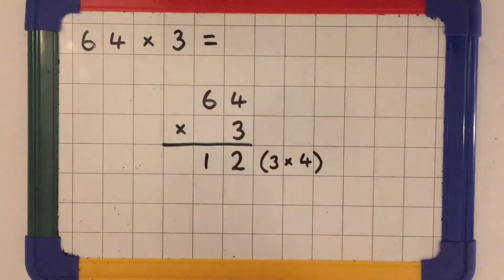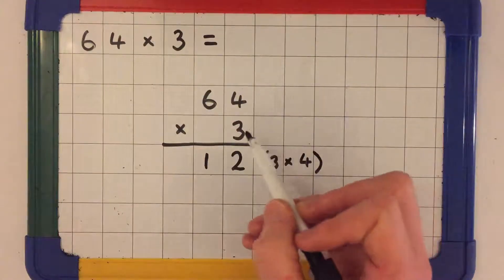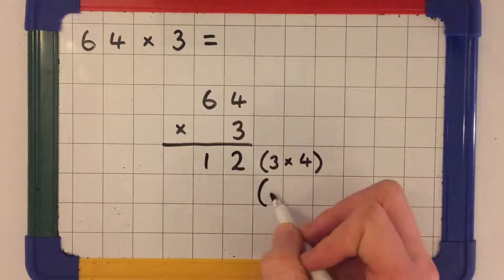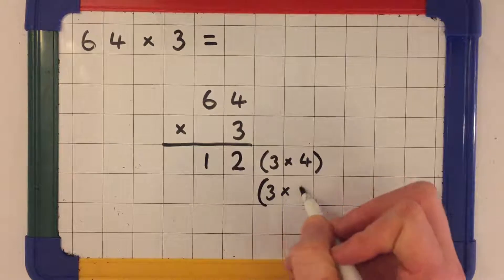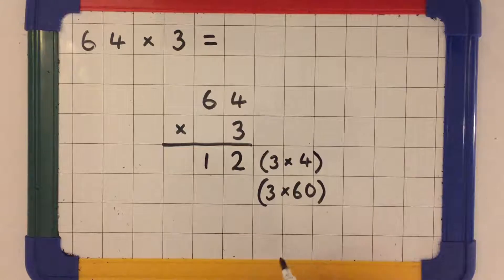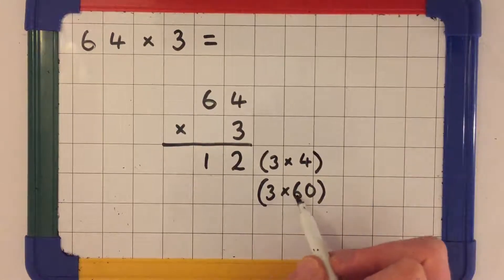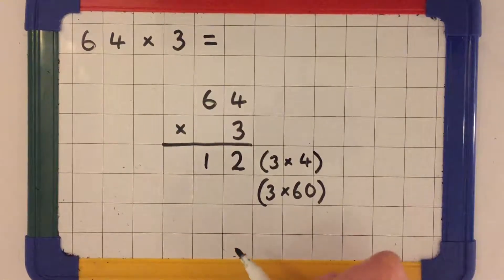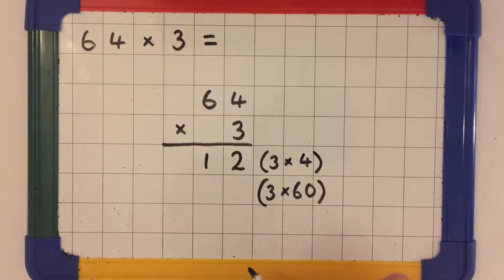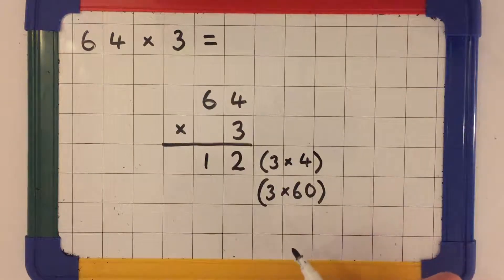And I'd write all of my hundreds in another column. Next, we need to solve the equation 3 times 60. 3 times 60 can be solved by working out 3 times 6 and then multiplying that by 10. So 3 times 6 is 18, and 18 multiplied by 10 is 180.